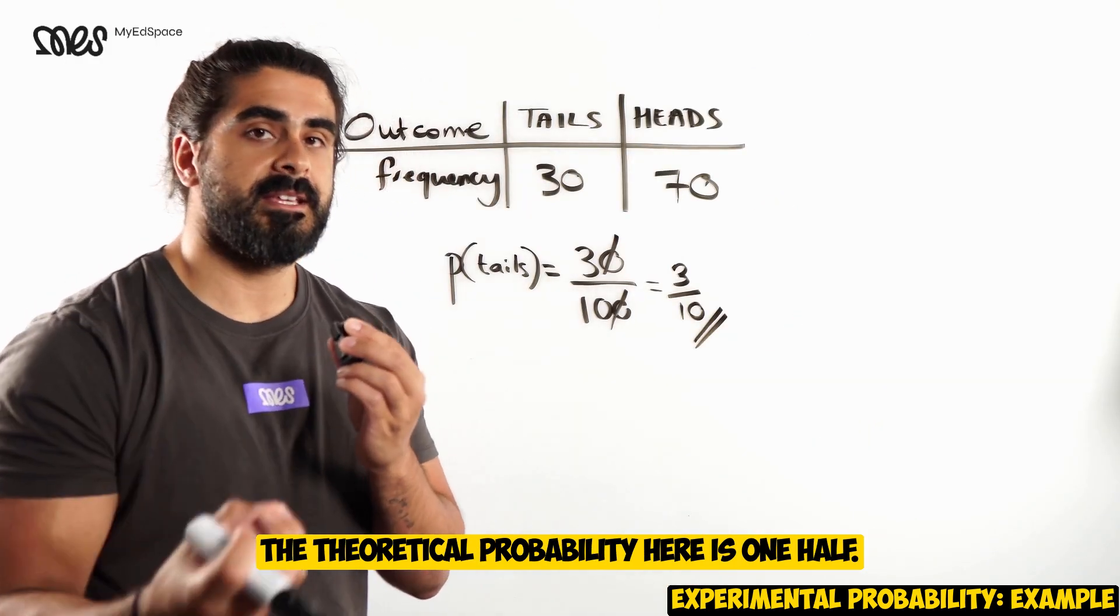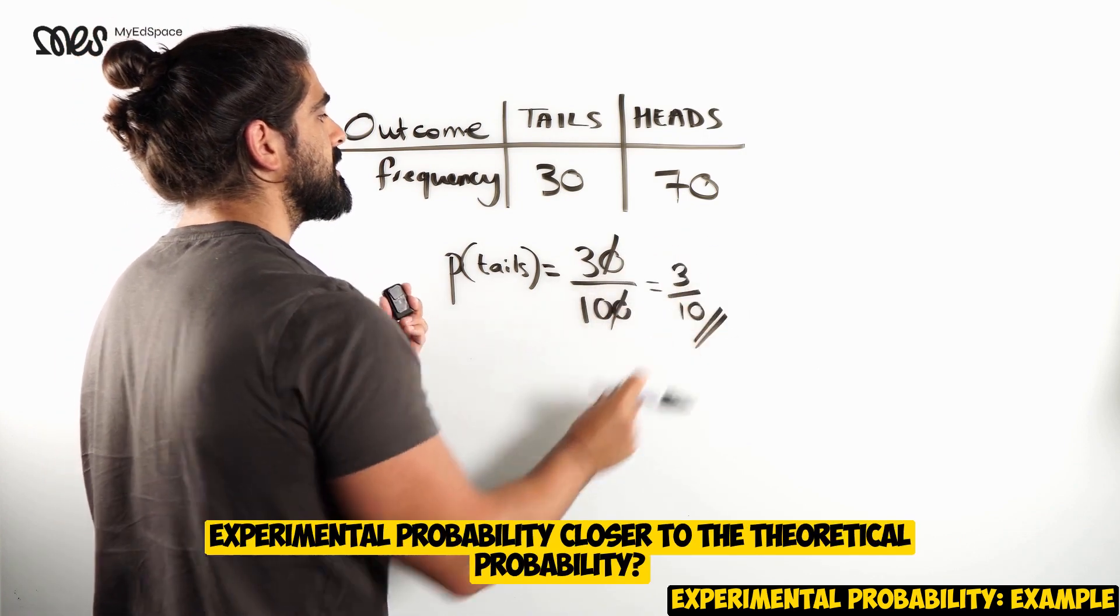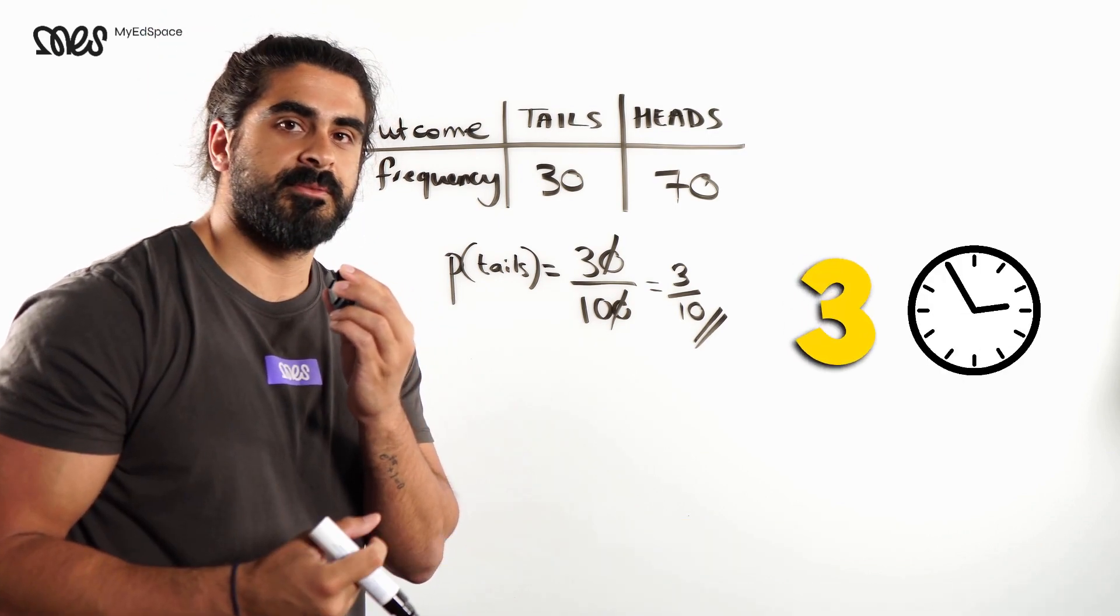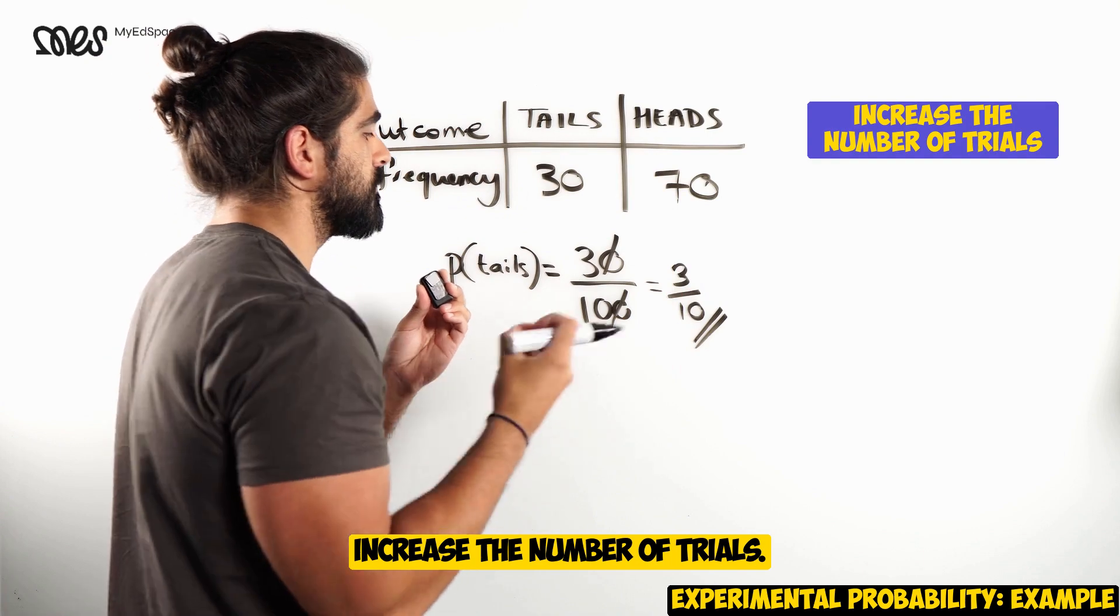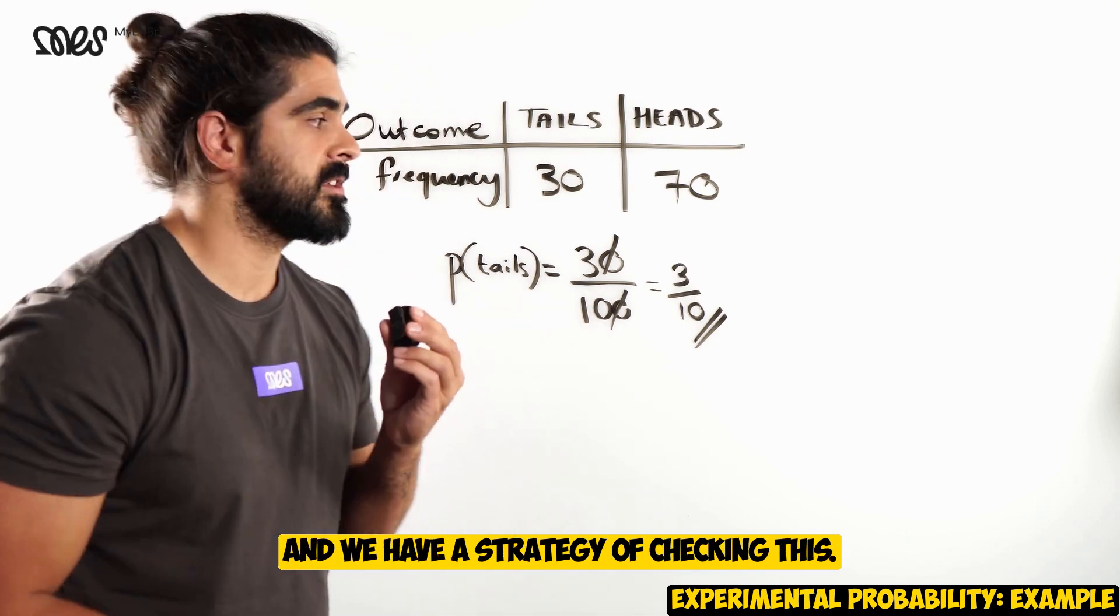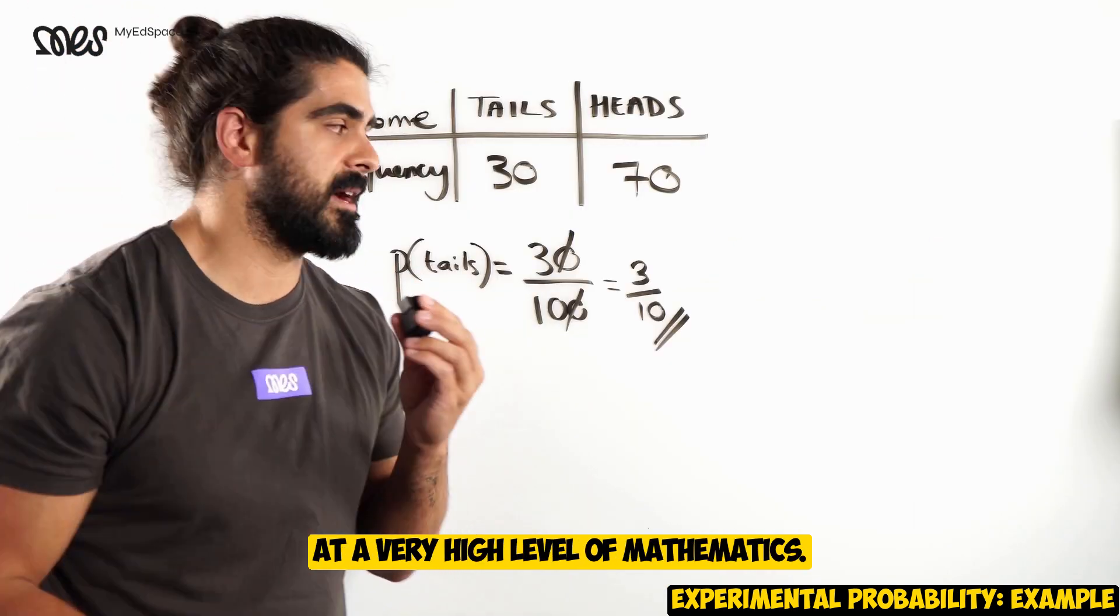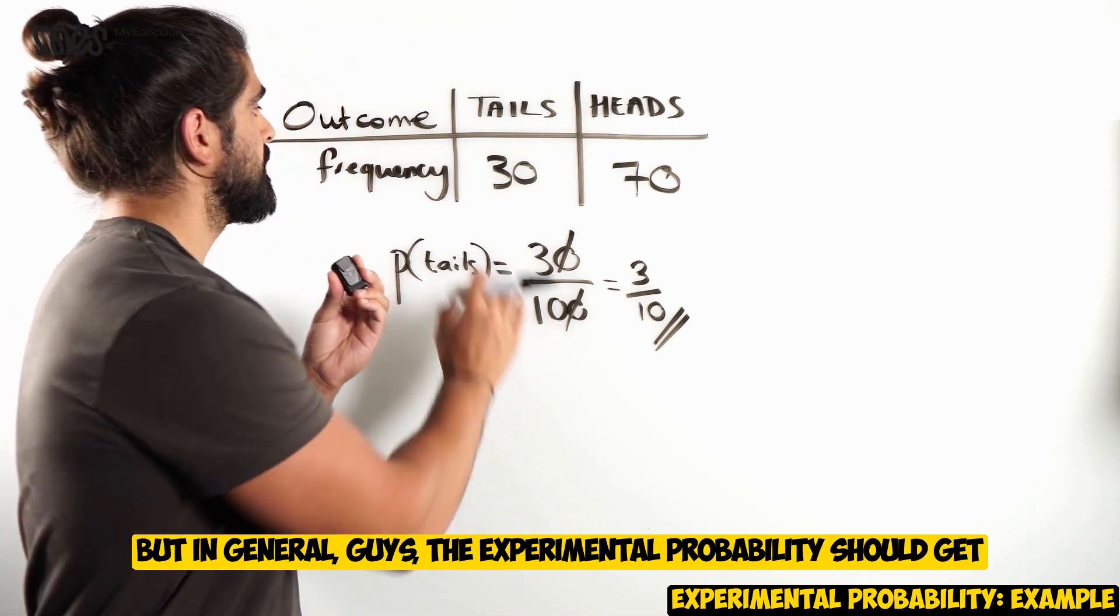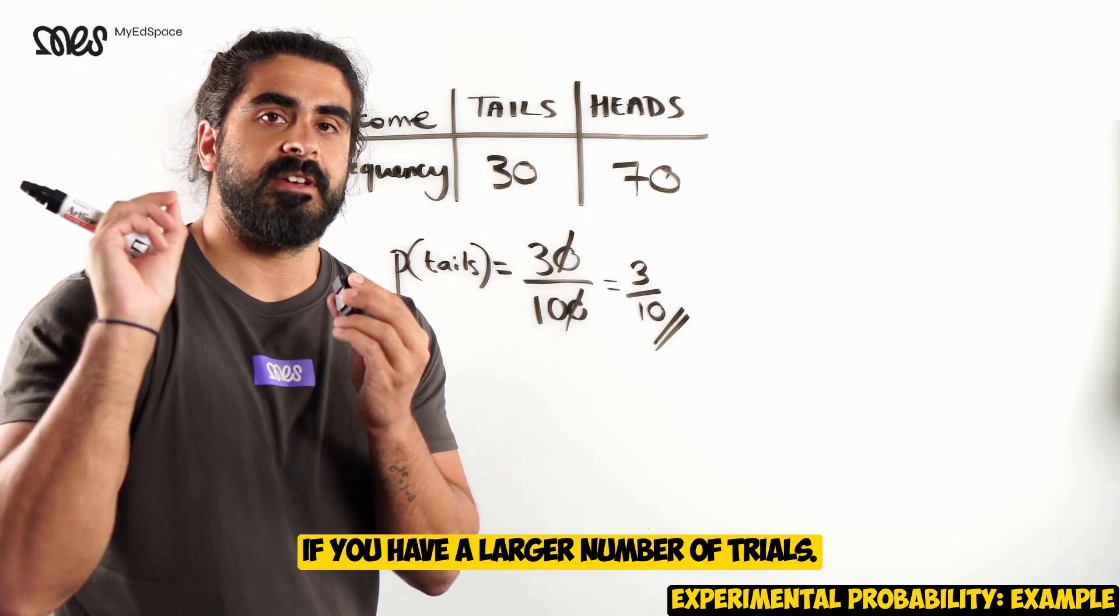The theoretical probability here is 1 half. And a very regular question that gets asked is, how can you get this experimental probability closer to the theoretical probability? What do you guys think the answer is? The answer is, you need to increase the number of trials. If you did this 1,000 times, this may get closer to 1 half. And we have a strategy of checking this. It's known as chi-squared test, which is much more formal. And it's something that you learn at a very high level of mathematics. And we can check using a hypothesis test to see if this coin is actually biased. But in general, guys, the experimental probability should get closer to the theoretical, if this situation is fair, if you have a larger number of trials.